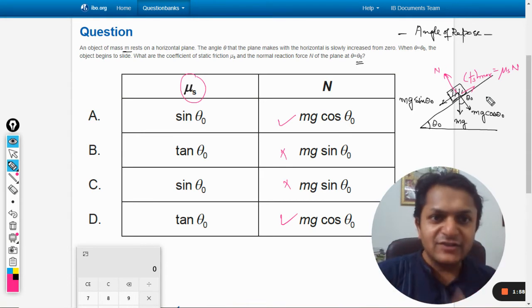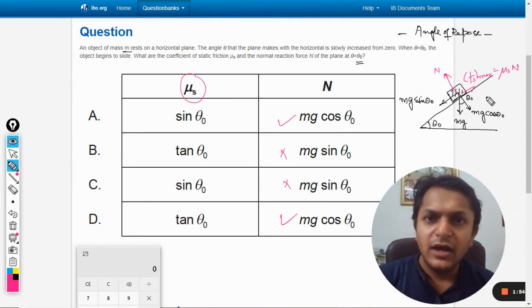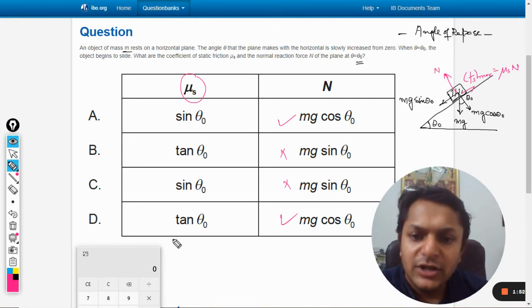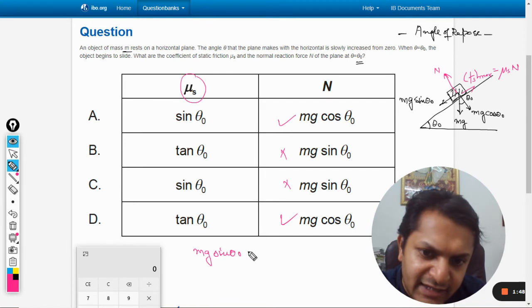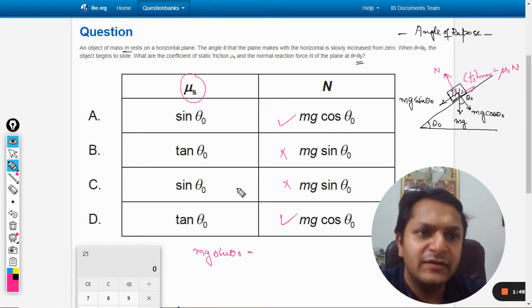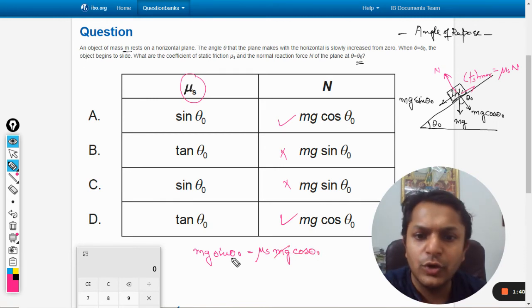This has to be equal to mg sin theta because it is a limiting case. It will be approximately equal. From that we can say mg sin theta naught equals μs times N, which is mg cos theta naught.